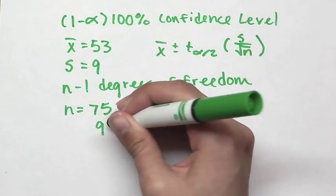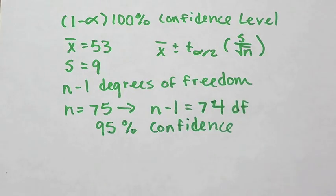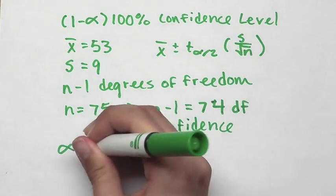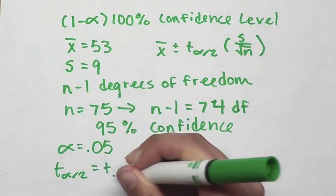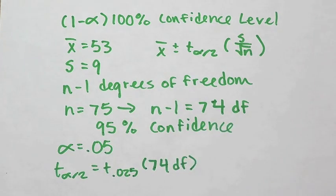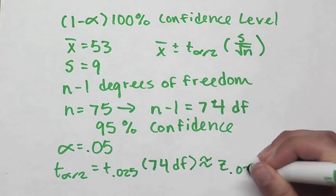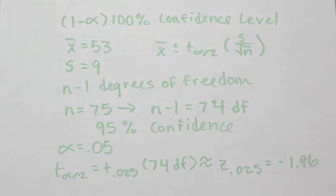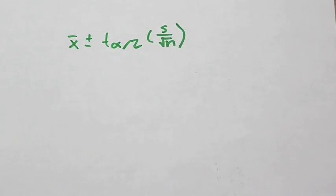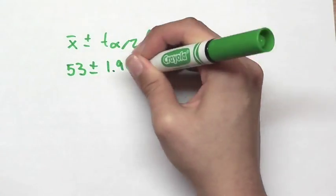To calculate a 95% confidence interval, we use alpha equals 0.05, which means we need to find t of 0.025 with 74 degrees of freedom. Since n is large, we can approximate the t distribution with normal distribution. We then plug all of the variables into the equation to yield the confidence interval.